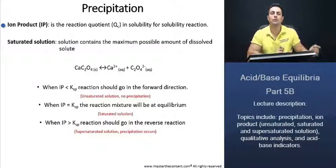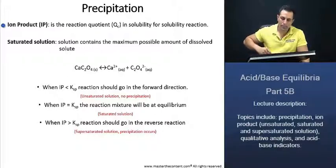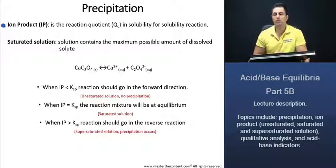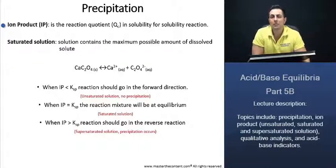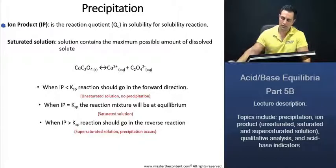Your career, our passion. How can we actually determine if the ionic compound will actually precipitate or not? Well, what we can do is we can use something called the ion product. And what the ion product is, is actually just the reaction quotient. However, for equilibrium equations, you can't place solids in the equilibrium equation, so they call it the ion product. Ion product is the reaction quotient in solubility for solubility reaction.